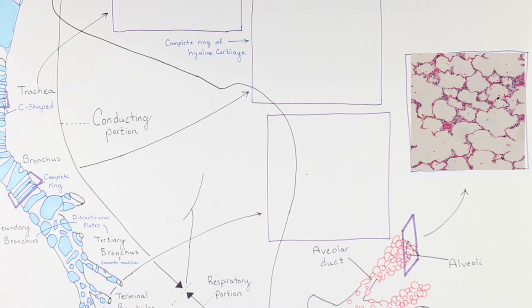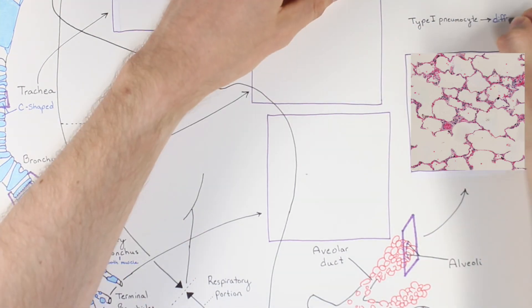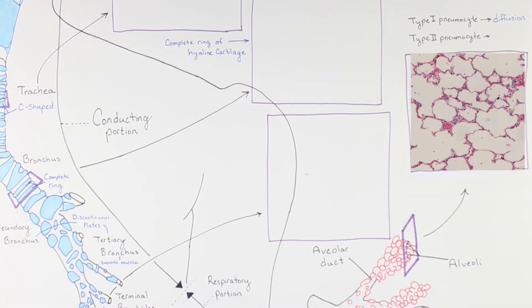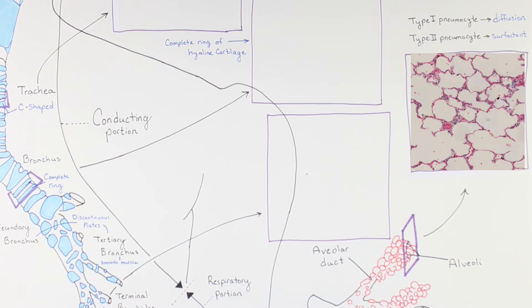The walls of the alveoli are made of two types of cells, the simple squamous type 1 pneumocyte and the cuboidal type 2 pneumocyte. The type 1 pneumocyte makes up about 95% of the alveolar wall and its thin structure allows for diffusion between red blood cells and the air cavity. Type 2 pneumocytes make up the remaining 5% of the alveolar wall and are responsible for producing pulmonary surfactant. Surfactant lowers the surface tension within these fine structures and prevents alveolar collapse.